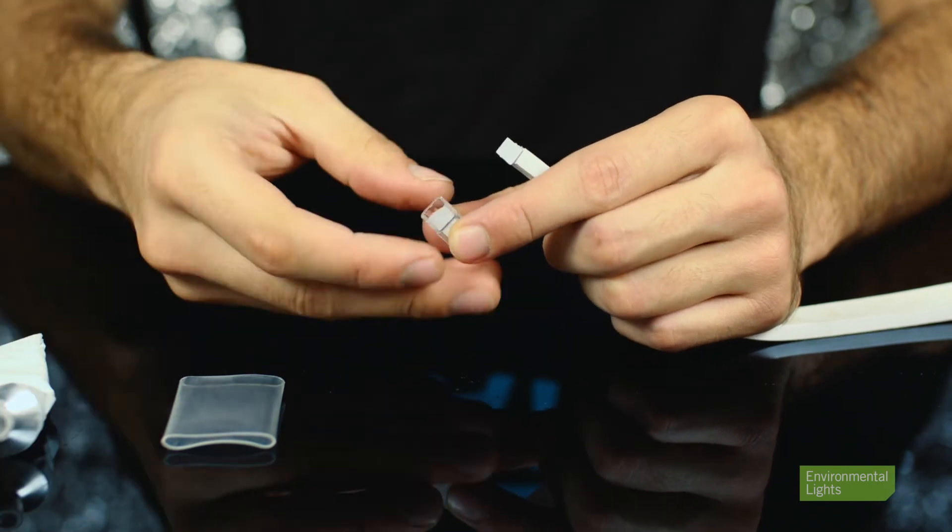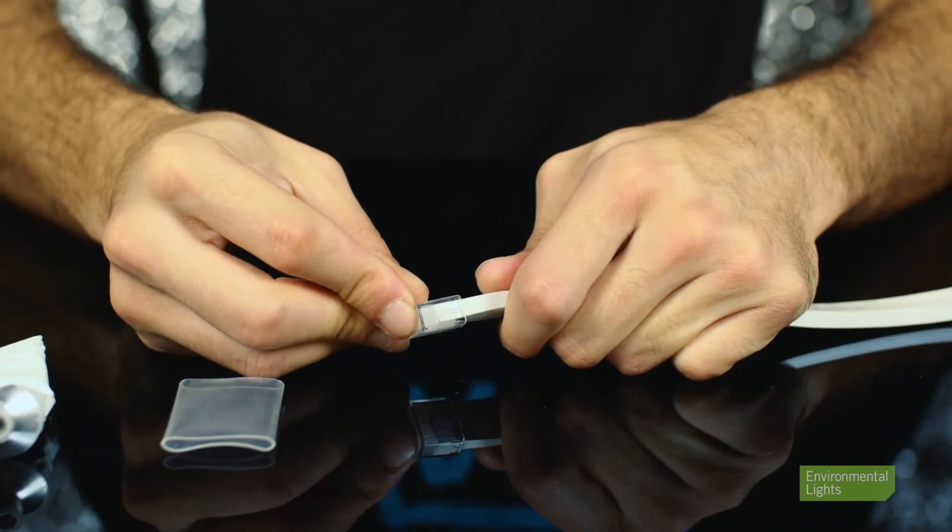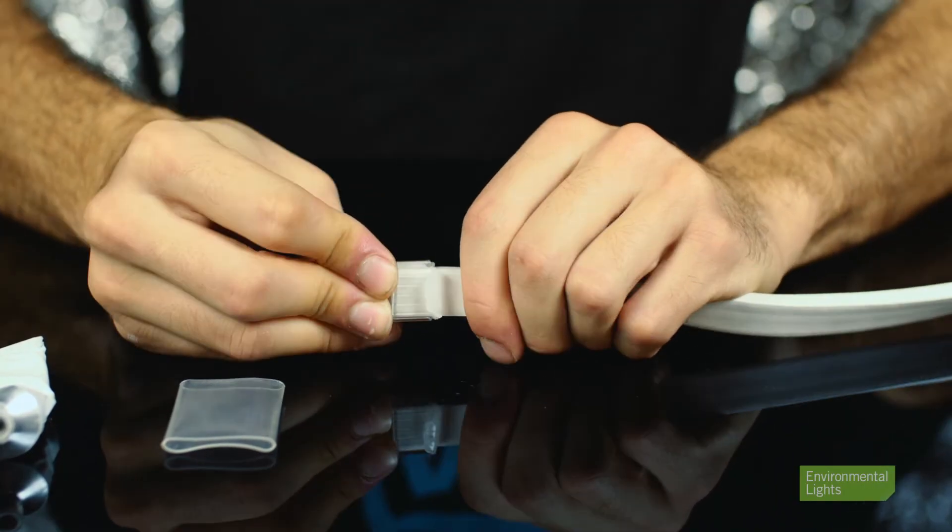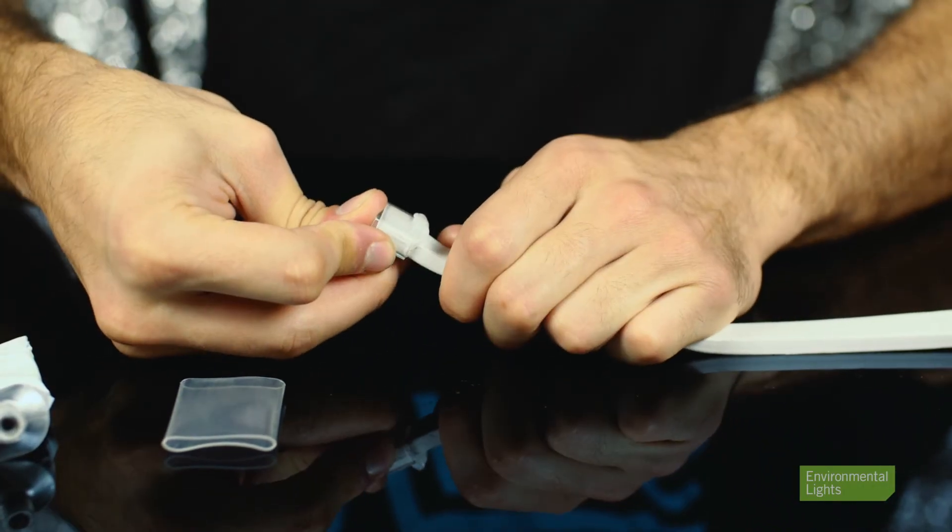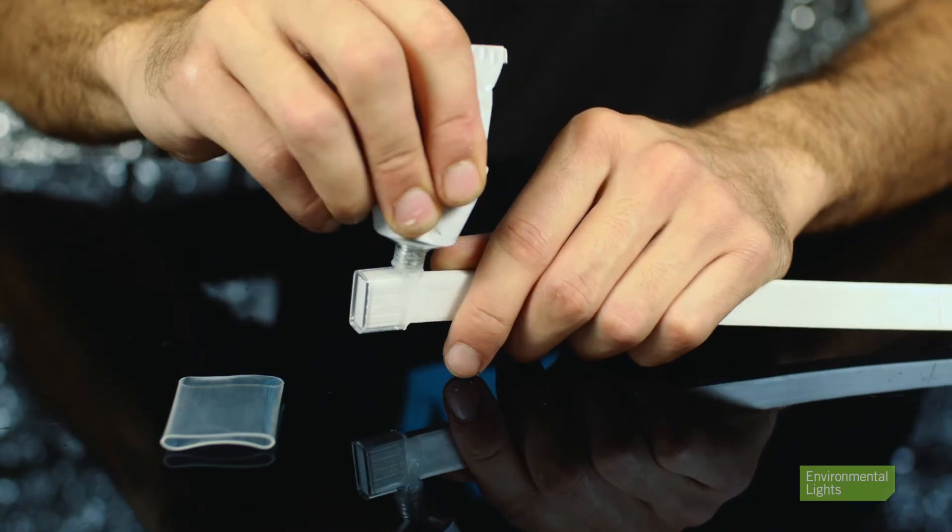Next, squeeze a liberal amount of sealant into the end cap. Place the end cap onto the end of the light slowly so the sealant oozes out. Then use a bit more sealant to coat the edges of the end cap.